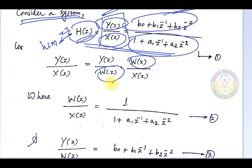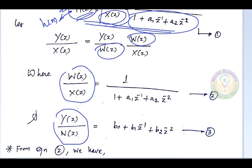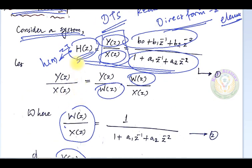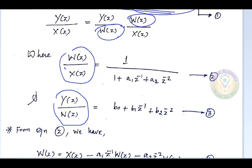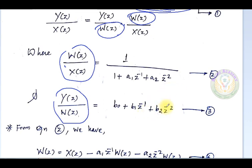We take the denominator part of the given function as W(z) divided by X(z), and the numerator part as Y(z) divided by W(z). If you multiply these two, you get the original H(z). After these two steps we are going to continue like we did in Direct Form 1 — each part is treated as a separate function.